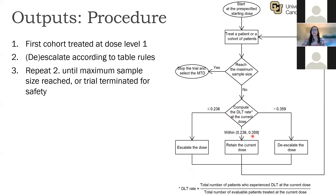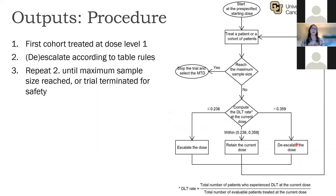If the DLT rate is within our escalation and de-escalation bounds, the next cohort is treated at the current dose. If below the bound, we escalate; if above, we de-escalate. We repeat this entire process until either the maximum sample size is reached or the trial is terminated due to safety reasons.